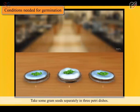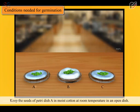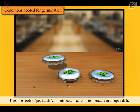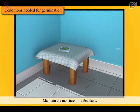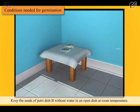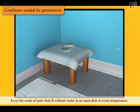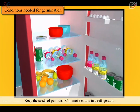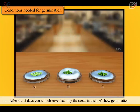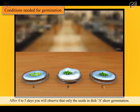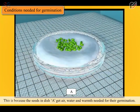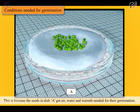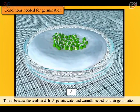Take some gram seeds separately in three petri dishes. Label these dishes as A, B and C. Keep the seeds of petri dish A in moist cotton at room temperature in an open dish. Maintain the moisture for a few days. Keep the seeds of petri dish B without water in an open dish at room temperature. Keep the seeds of petri dish C in moist cotton in a refrigerator. After four to five days, you will observe that only the seeds in dish A show germination. This is because the seeds in dish A get air, water and warmth needed for their germination.